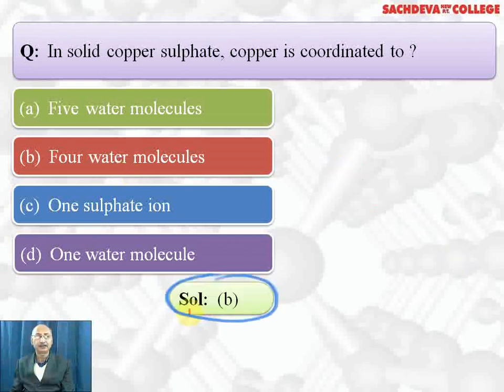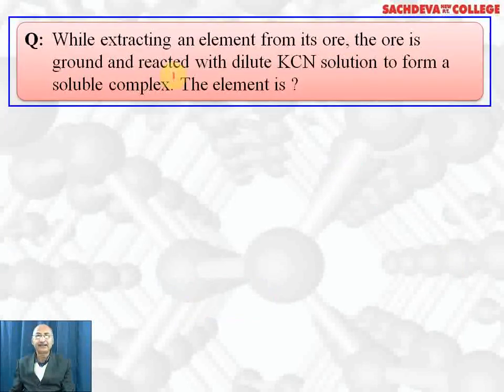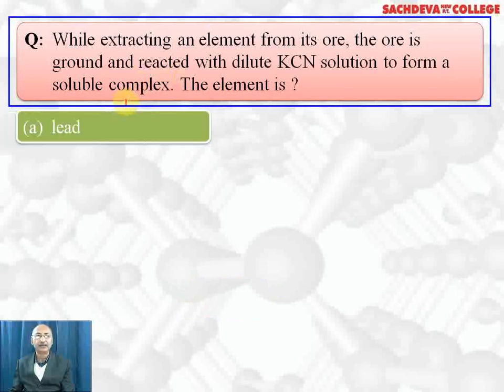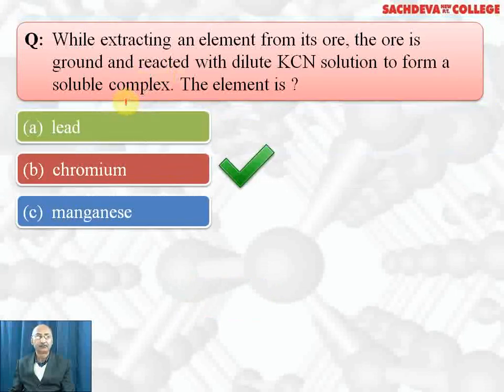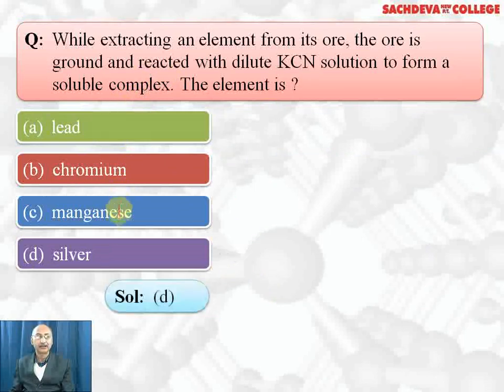While extracting an element from its ore, the ore is ground and reacted with dilute KCN solution to form a soluble complex. The element is lead, chromium, manganese, or silver. Correct answer is silver because silver forms soluble complex with potassium cyanide.